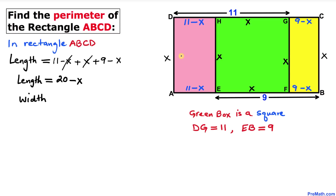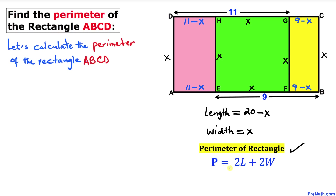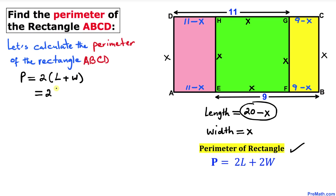The width of rectangle ABCD is simply x. Now for the final step, the perimeter formula is: P = 2 times length + 2 times width, which simplifies to P = 2 times (length + width). In our case, the length is 20 minus x, so we write 2 times (20 minus x plus x).